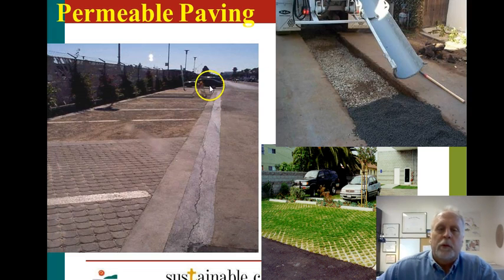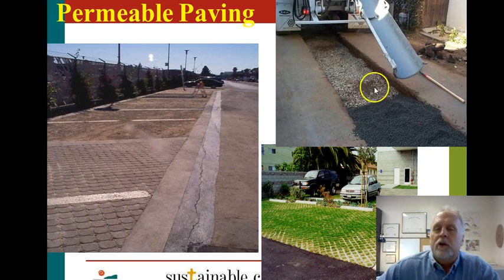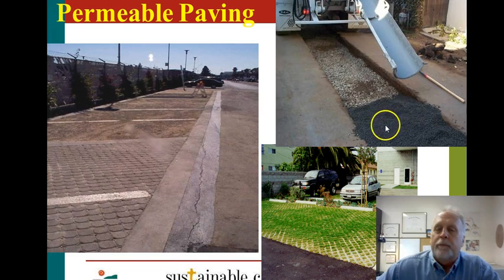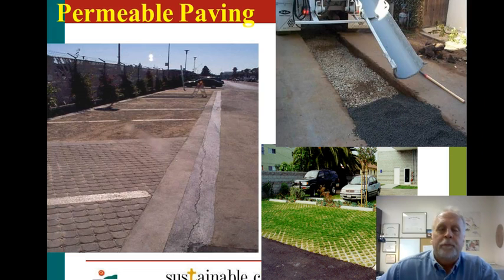Here are some different permeable pavements from a research site where they tried different types. They have these blocks and porous areas — you can see the drainage layer underneath, and the pavement has porosity to it so water drains through. Some of them are planted as well.